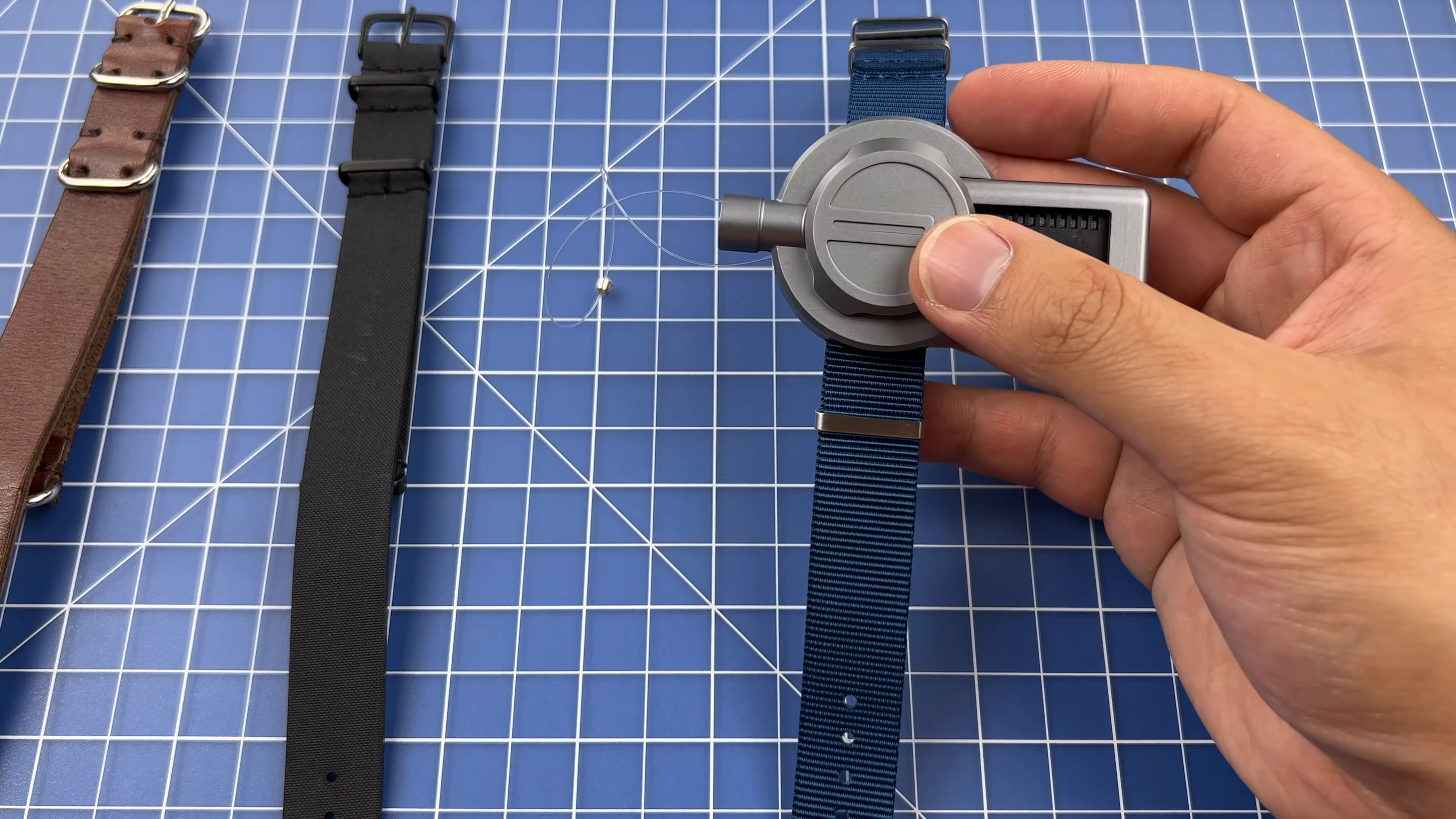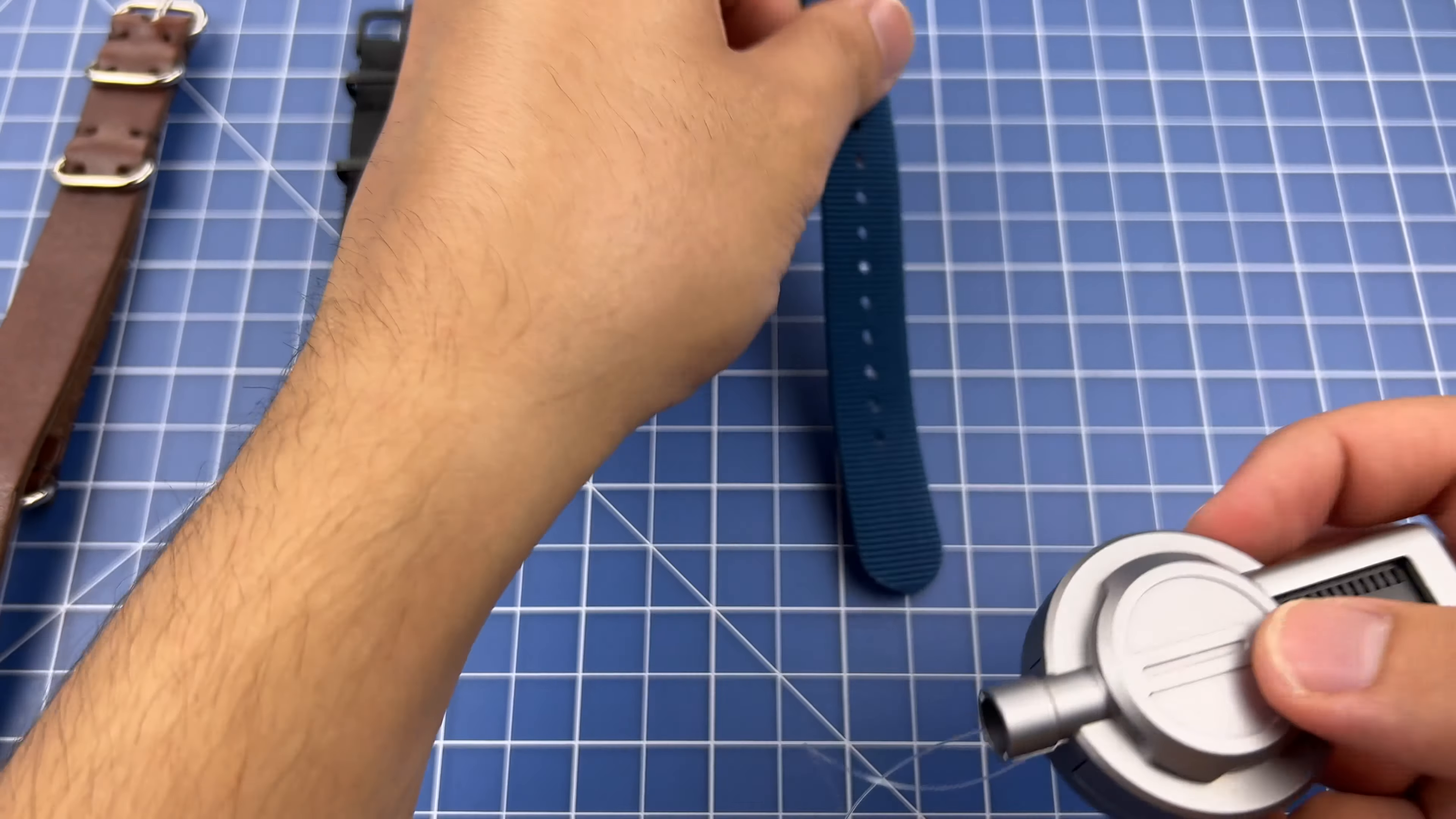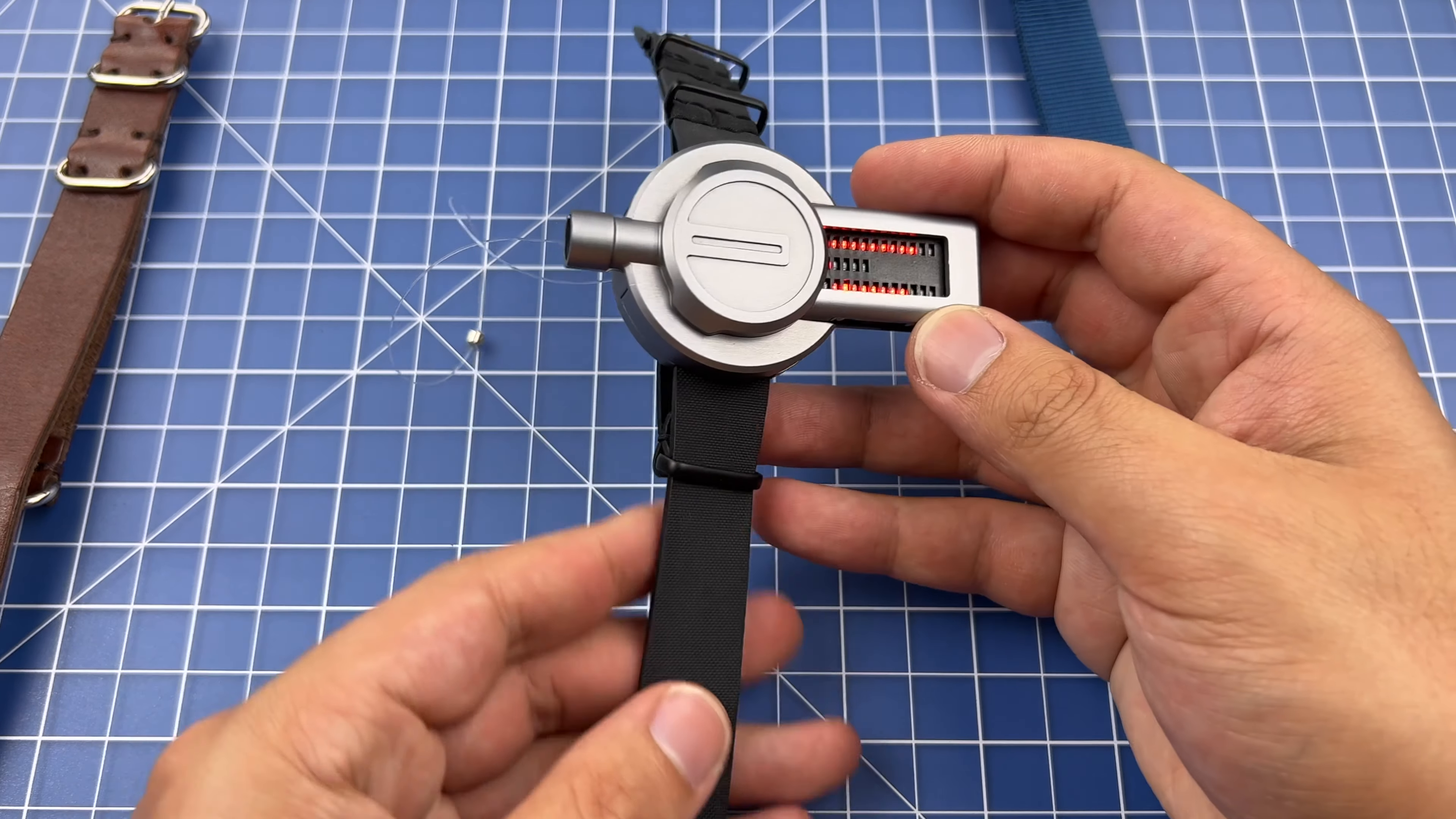Now you're ready to go. The Magnus can be worn with any 18mm natal style watch strap. To replace the strap, pull out the existing strap and you can see a rectangular hole. Just slot the new strap inside that hole. And just like that, you're ready to go.